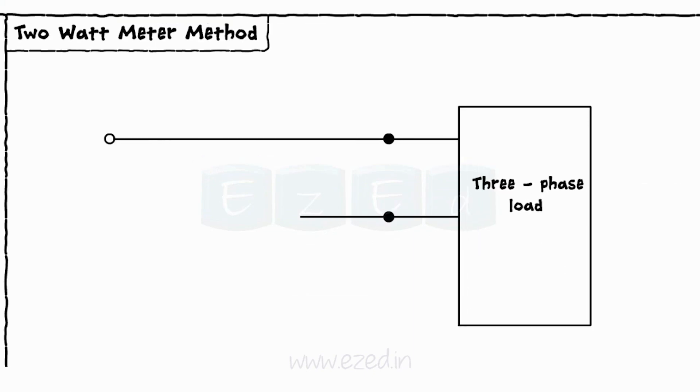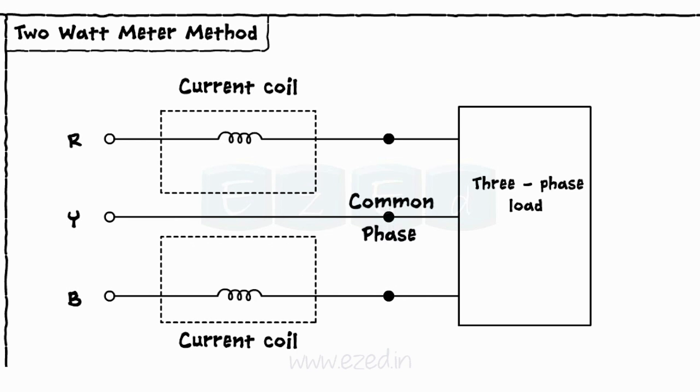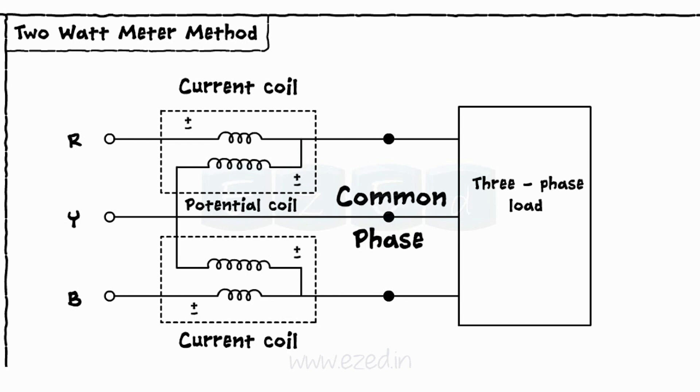Consider a three-phase system with the phases as R, Y, and B. To this system, the two wattmeters are connected keeping one phase as one common terminal. The two current coils are connected in series with phase R and B, and the voltage coils are connected between phase R, Y and B, Y, phase Y being the common phase.